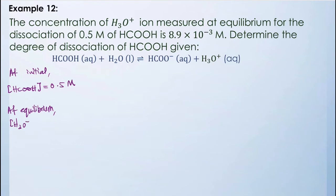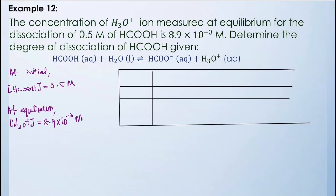To find the degree of dissociation, we need the change in concentration for HCOOH. We will use an ICE table. As usual, we construct the table and label it with Initial, Change, and Equilibrium.